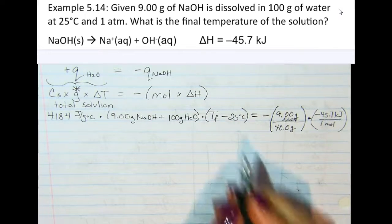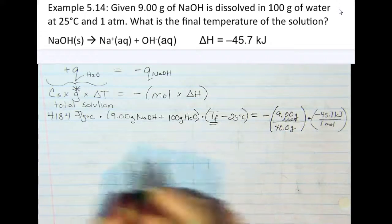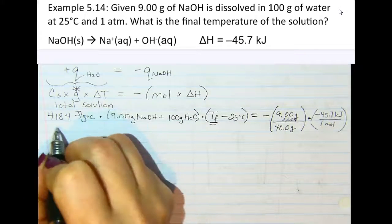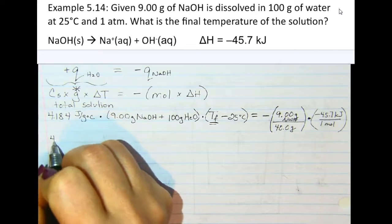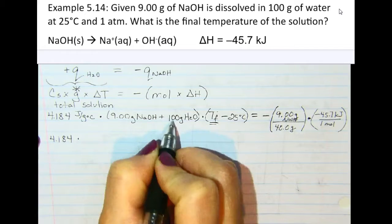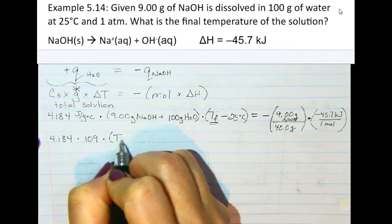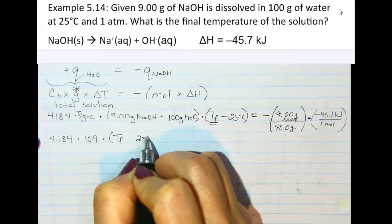Okay, so there's the setup of our equation, and here is what we are trying to solve for and isolate. So let's do some simplifying. So we have 4.184 times, combine 109, so we have 109, times, and then we have Tf minus 25.